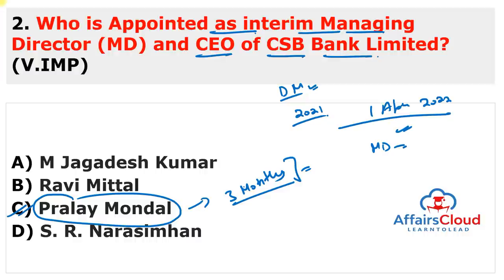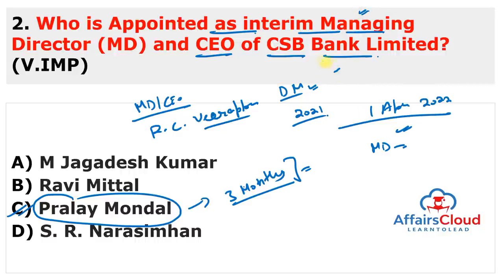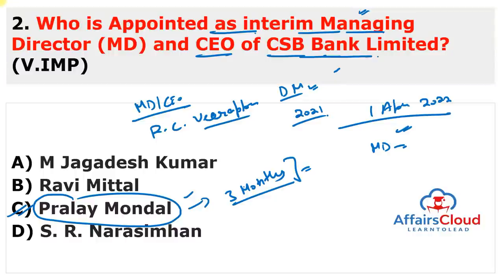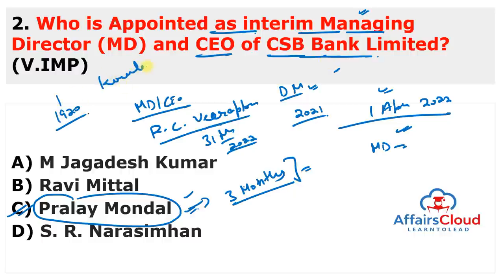He is appointed temporarily because the earlier MD and CEO, Rajendran Chinna Virappan, announced his decision to retire early due to health concerns. CSB stands for Catholic Syrian Bank, one of the oldest private sector banks in India. Its current MD and CEO Rajendran Chinna Virappan will retire on 31st March 2022, and on 1st April, Prale Mondal will assume charge. The bank was established in 1920 and its headquarter is in Kerala.